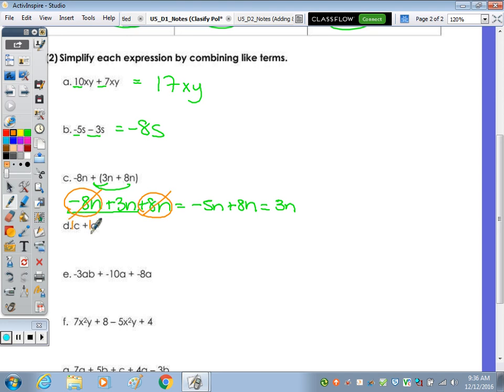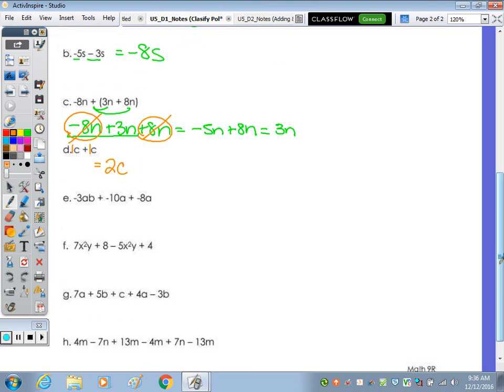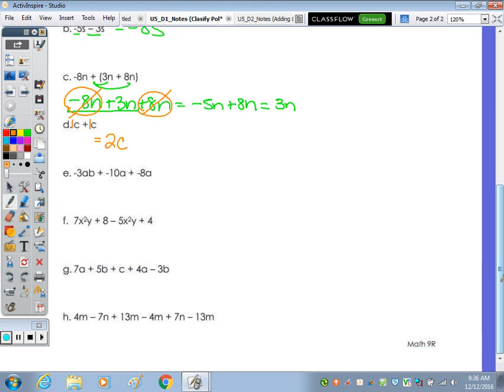C plus c, you can think, again, if there's no coefficient written, it is a 1. So 1 plus 1 is 2, keeping the c. So down below, we have an ab term and a terms. Since there's no other ab term, we can only combine these two. So I'm going to bring along the negative 3ab. And then combine negative 10a minus 8a. Negative 10 minus 8 is negative 18. Bring along the a.